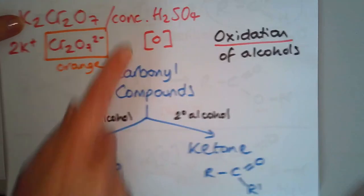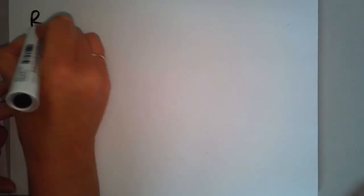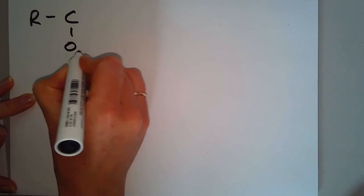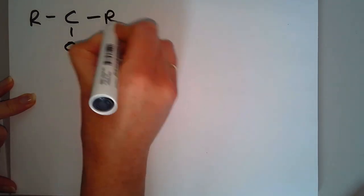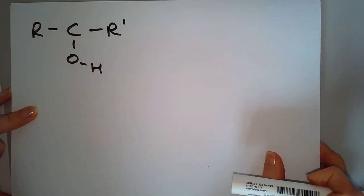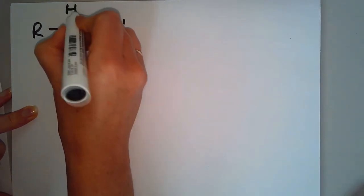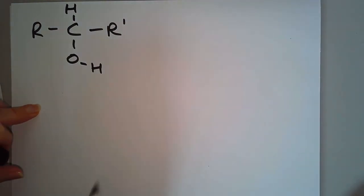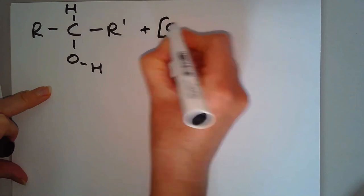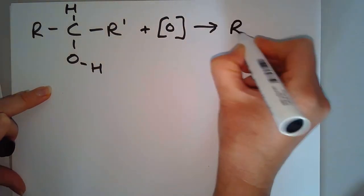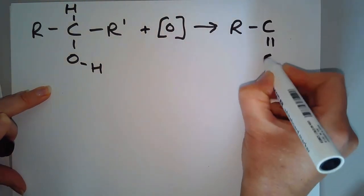Don't forget your carbon makes four bonds, so we'll have to put our hydrogen there. We're going to use that oxidizing agent and we're going to make our ketone.